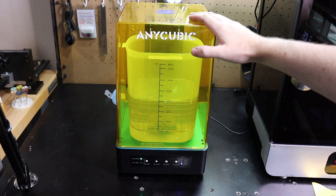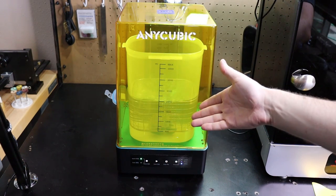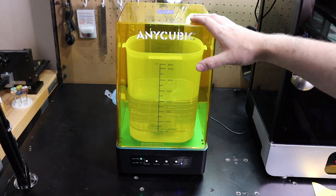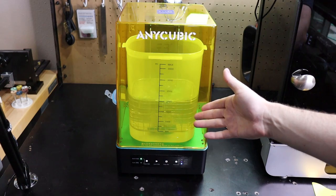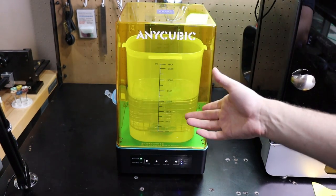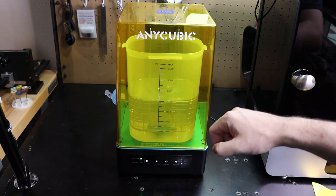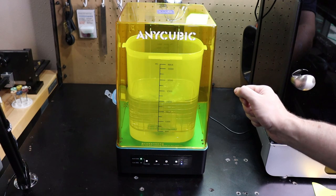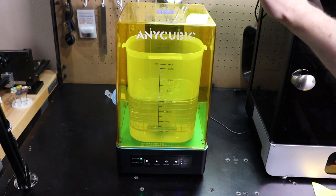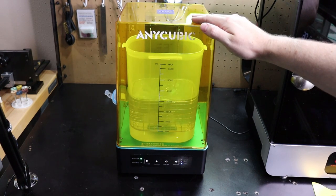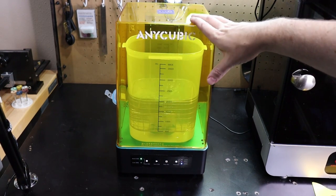So this is the Anycubic Wash & Cure System for resin printing. This makes your cleanup and the actual curing process of your parts so much faster and cleaner than if you just did it all by hand. Don't get me wrong, you still can do that, but this basically takes all the mess out of it. This was sent over to me by Gearbest, and if you would like one, I will have links in the description below. So let's get started on this video.